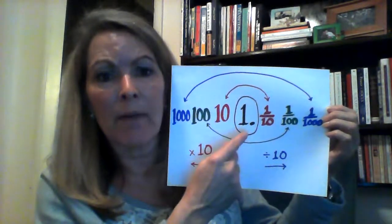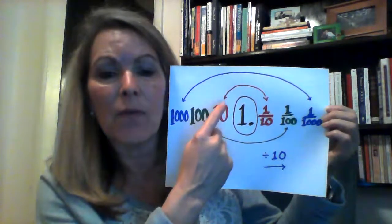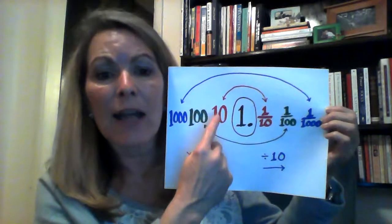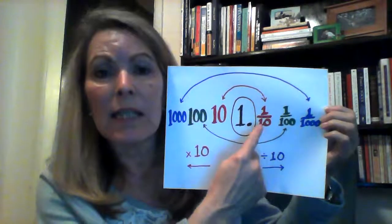Also, we can see how the tens, which are ten times the ones, are actually balanced on the other side by the tenths, which are the ones divided into ten parts.